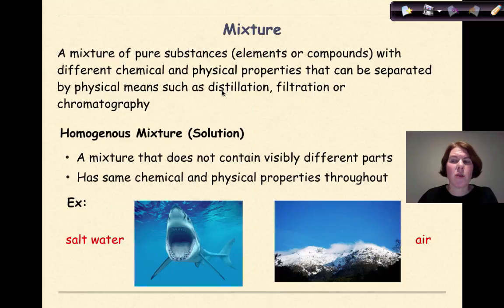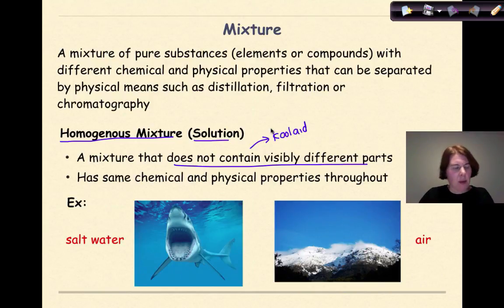So the first type of mixture that we need to be familiar with is something known as a homogeneous mixture, otherwise known as a solution. This is a mixture that does not contain visibly different parts, so it's going to look the same throughout. One image that always comes to mind for me is when you make Kool-Aid. Kool-Aid is made up of a bunch of different parts, so I can have basically my powder and my water coming together, making a solution, and it looks the same throughout. So it's going to have the same chemical and physical properties throughout.